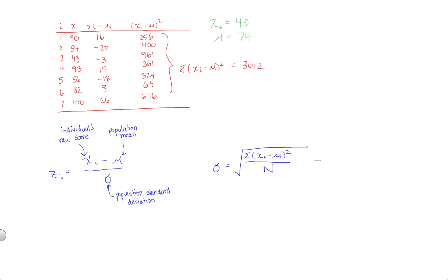At this point, we take that 3042 and divide by capital N, not N minus 1, because this is a population. So it's 7, our population size. Then we square root this value, and we get a standard deviation of 20.85.